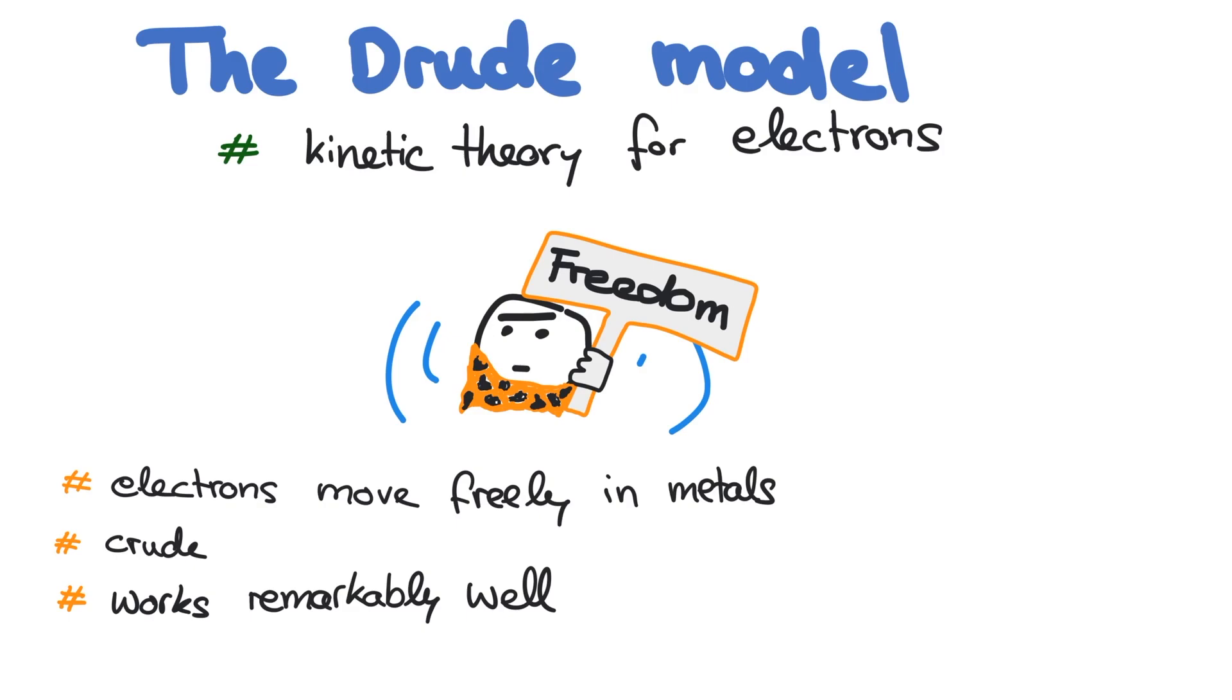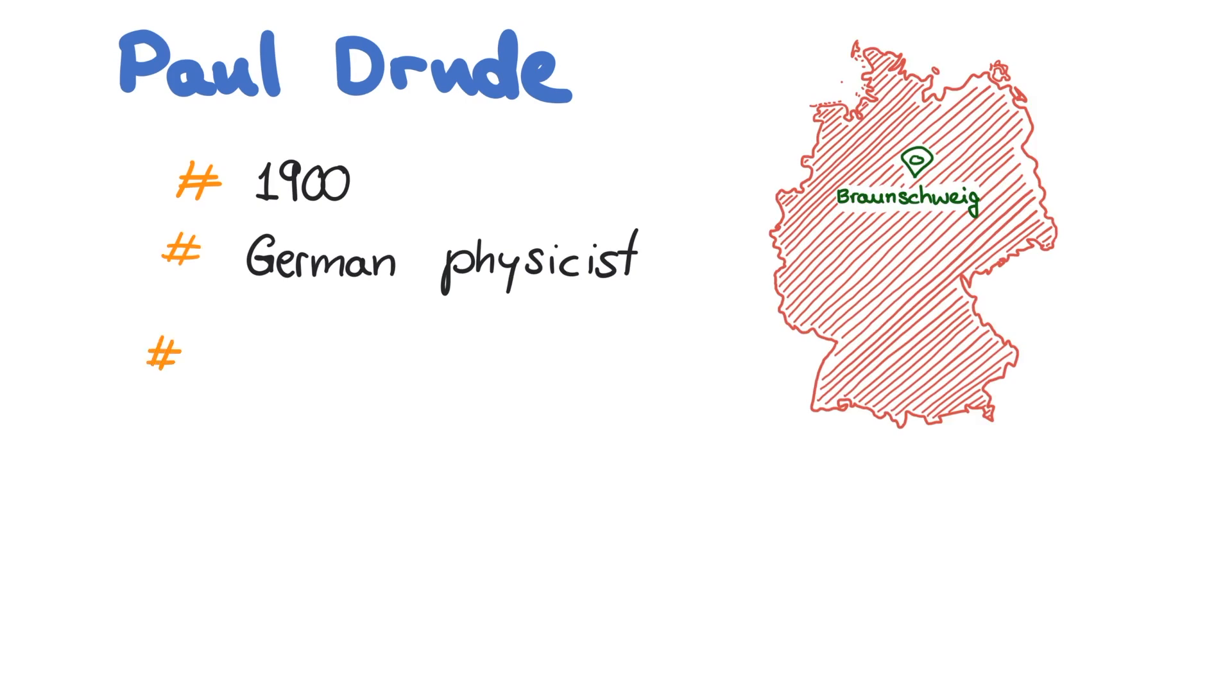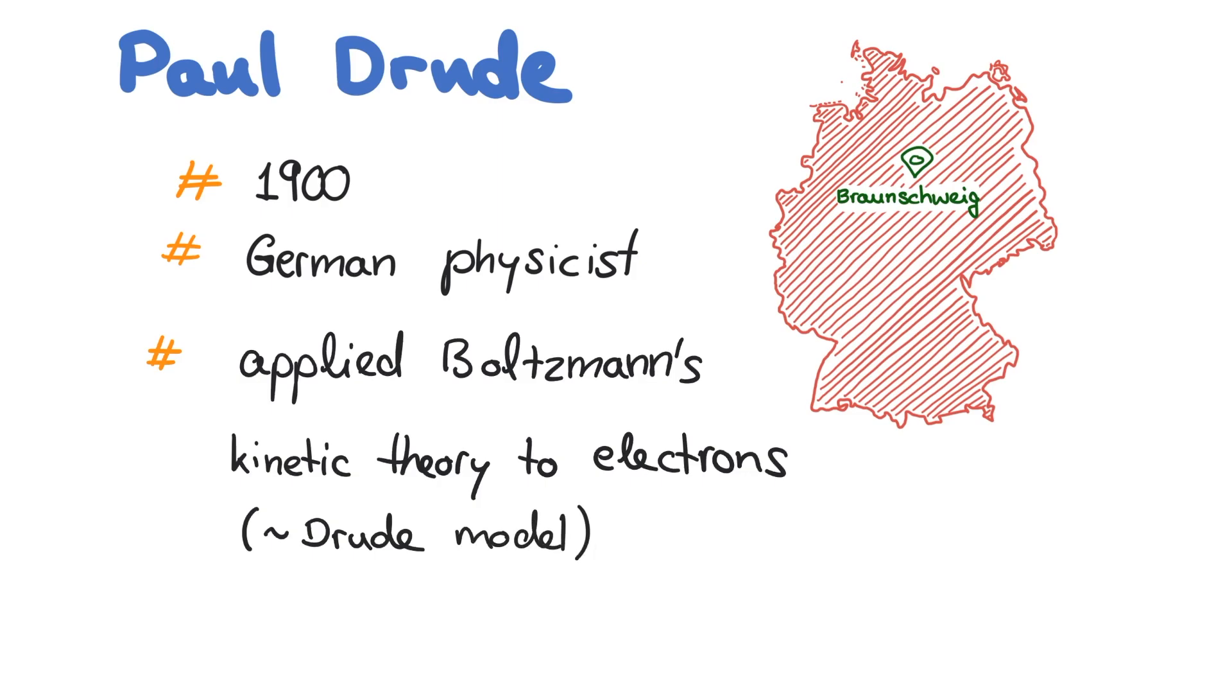So let us get an idea what the Drude model is about. In 1900, German physicist Paul Drude developed this theory for electrons in metals. He realized that he could apply Boltzmann's kinetic theory for gases to understand the electrons' motion.